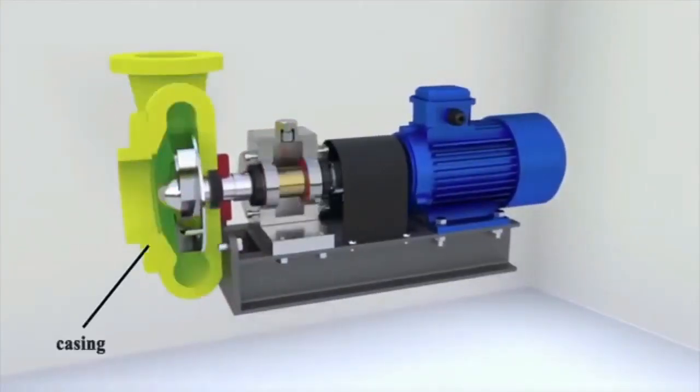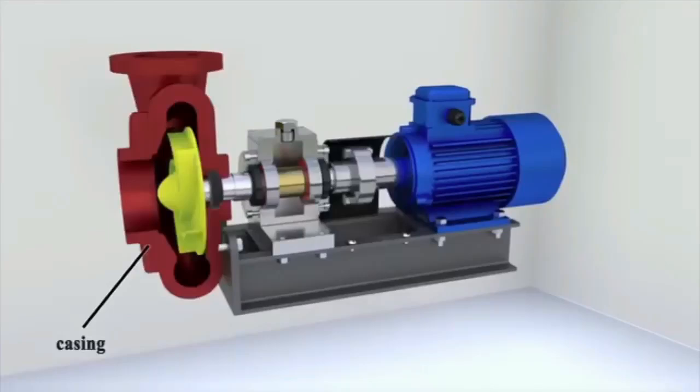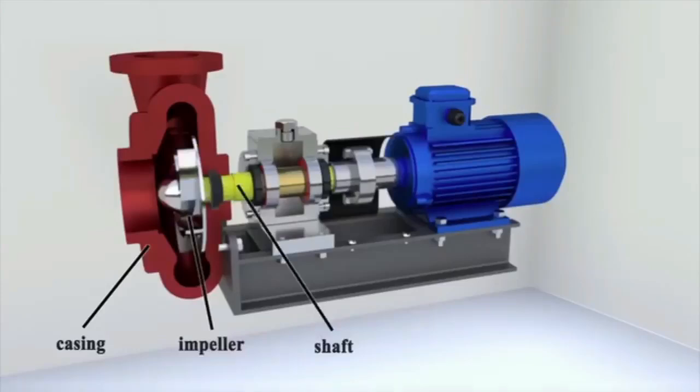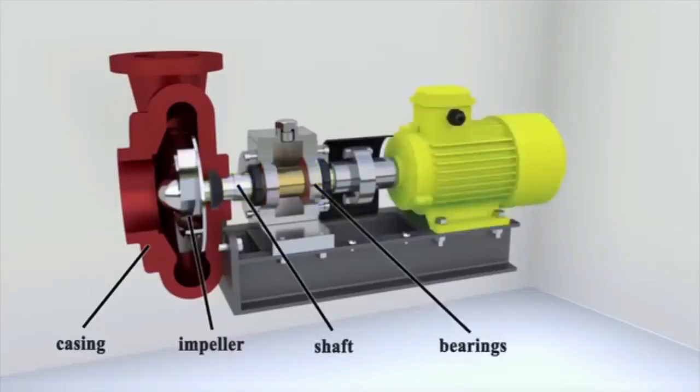The main elements of a centrifugal pump are the casing and the impeller, which drives the liquid. The impeller is mounted on a shaft. The shaft can rotate on bearings. The power is transmitted from the motor.